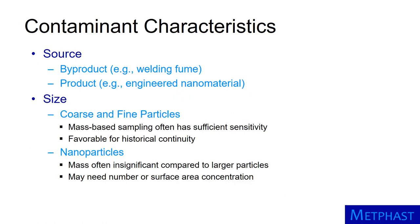We also need to think about the characteristics of the contaminant we are trying to measure. The source of the particles is important. Oftentimes, particles are emitted as a byproduct of an industrial process — welding fumes are an example of fine and nanoparticles emitted by a common industrial process. In contrast, the product may be the contaminant of interest, such as engineered nanoparticles. In this case, we need to be able to differentiate the product from the byproduct.